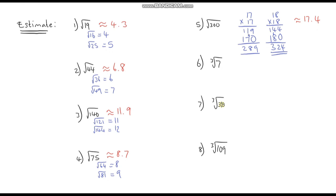Now these next three — we're working out the cube root, so it helps to know your cube numbers. Let's write them down: 1 cubed is 1, 2 cubed is 8 (2×2×2), 3 cubed is 27 (3×3×3), 4 cubed is 64 (4×4×4). And since we're going up to 109, let's also do 5 cubed, which is 125. Now we've got all our cube numbers and we should be able to estimate these.